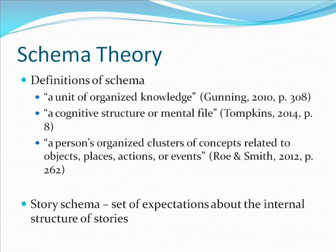It is currently theorized that our knowledge is packaged into units known as schemata. A schema, in general, is the organized knowledge that one has about people, places, things, or events. Shown here are three definitions for a schema by Gunning, Tompkins, and Rowan Smith. Schema is a unit of organized knowledge — a cognitive structure or mental file. It is a person's organized cluster of concepts related to objects, places, actions, or events.